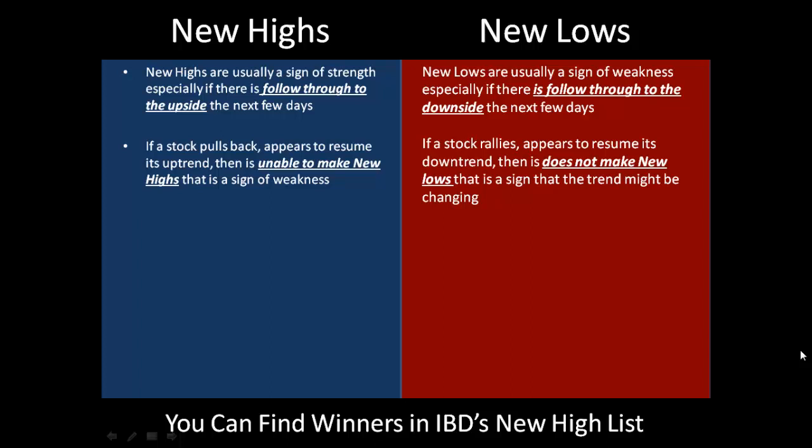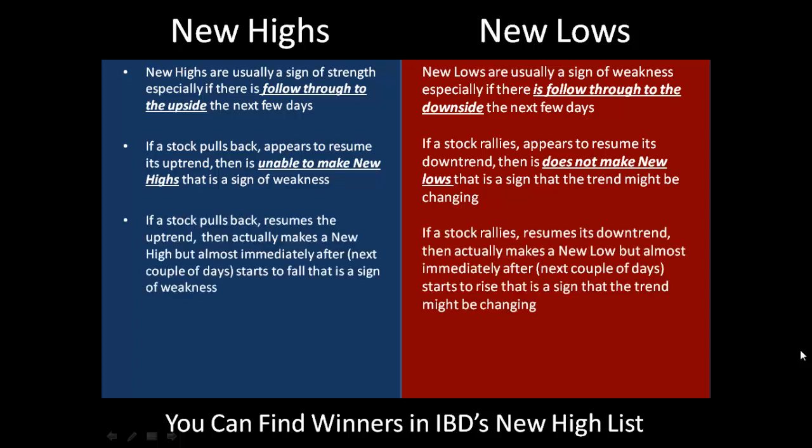That's a sign that selling might be exhausting itself. When you have a stock that's making new highs and it pulls back, then resumes the uptrend and actually continues to make new highs but then almost immediately after it does make that new high it starts to fall backwards — that's definitely a sign of weakness. Now if you have a stock in a downtrend that rallies, resumes its downtrend, makes a new low but almost immediately — usually within the next couple of days — starts to rise, that could be a sign that the downtrend is coming to an end.